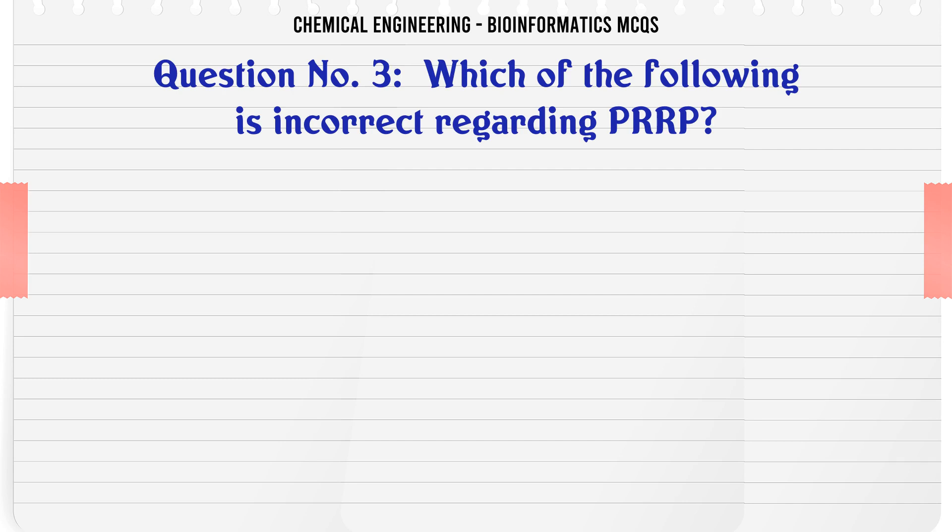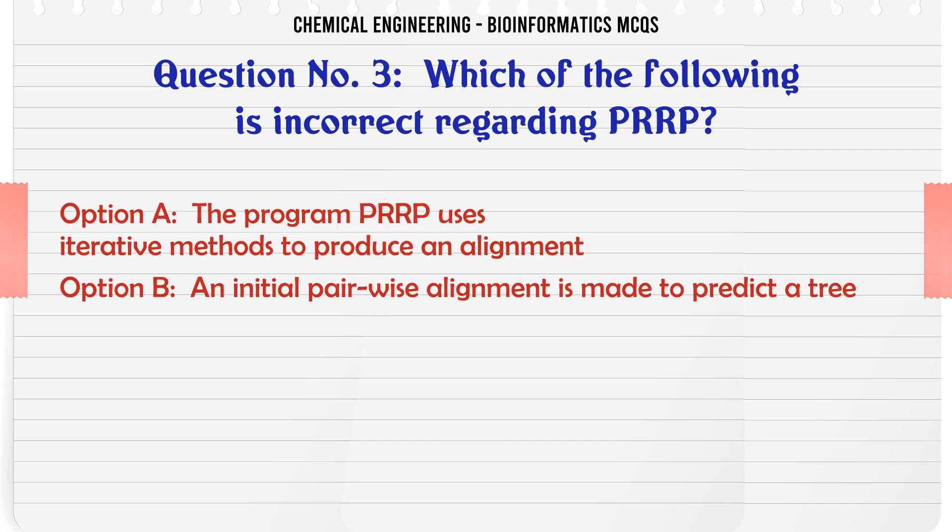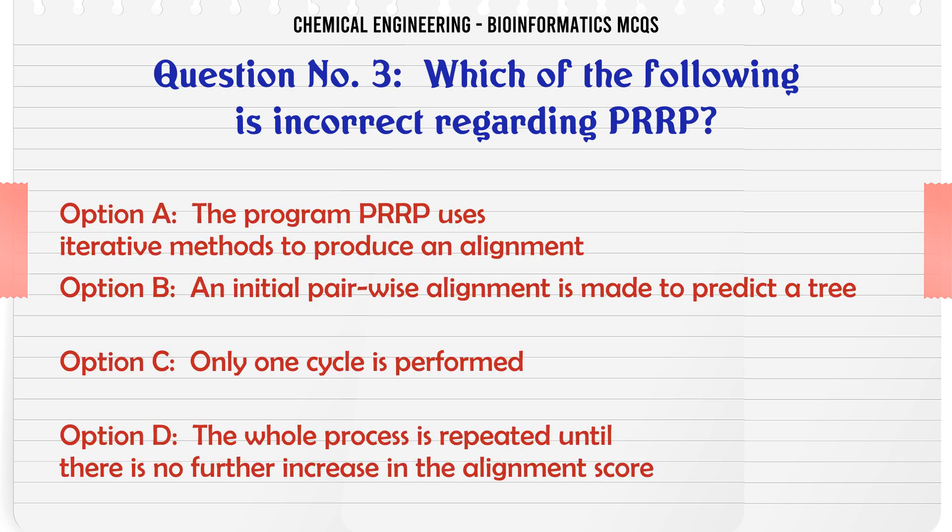Which of the following is incorrect regarding PRRP? A. The program PRRP uses iterative methods to produce an alignment. B. An initial pairwise alignment is made to predict a tree.